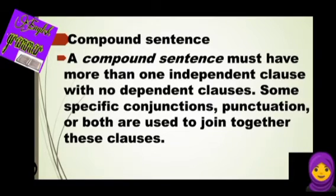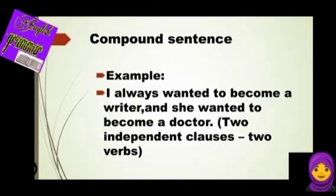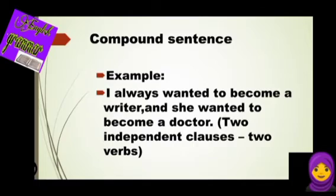Compound sentence. A compound sentence must have more than one independent clause with no dependent clause. Some specific conjunctions, punctuation, or both are used to join these clauses together. For example, 'I always wanted to become a writer and she wanted to become a doctor.' In this sentence we have two independent clauses and two verbs. So a compound sentence has two independent clauses. For example, 'I plan to go to the hockey game but I couldn't get sticks.'